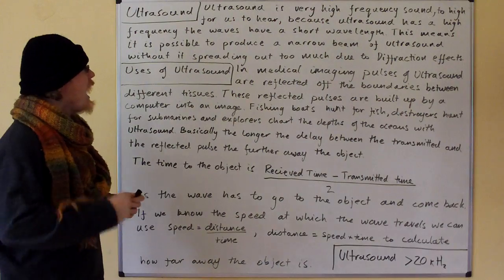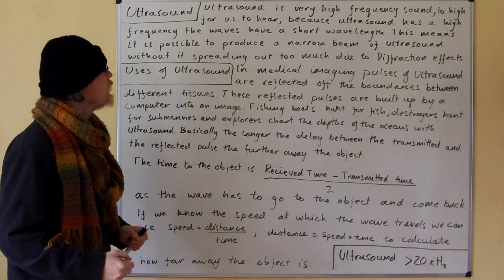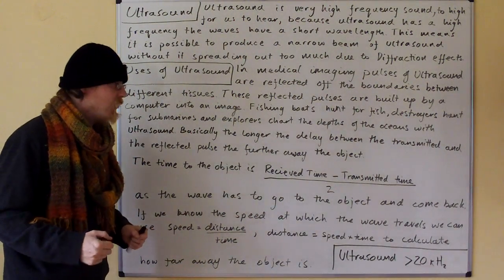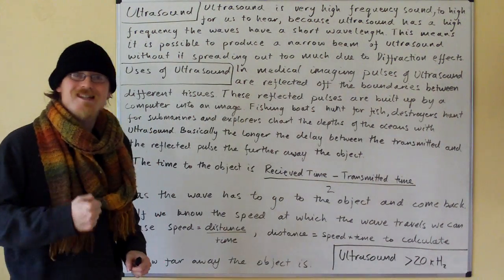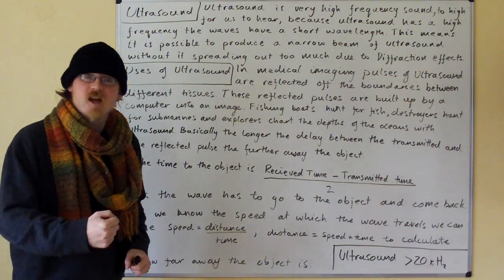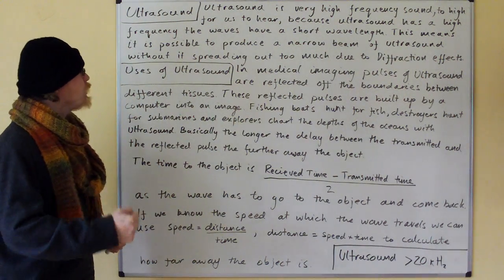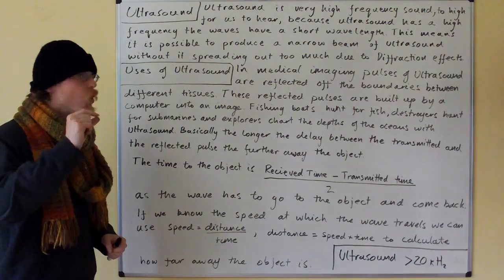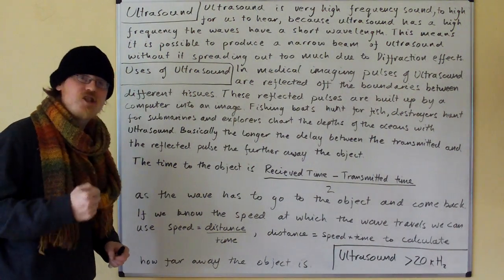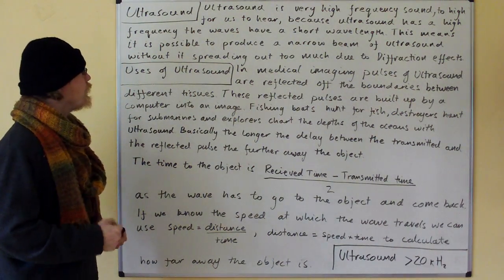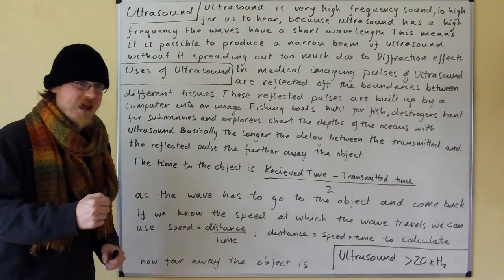Ultrasound is very high frequency sound — too high for us to hear. It's actually above 20 kilohertz, so that's above 20,000 cycles per second. Because ultrasound has a high frequency, the waves have a short wavelength. This means it is possible to produce a narrow beam of ultrasound without it spreading out too much due to diffraction effects.